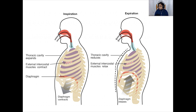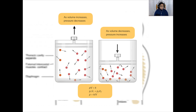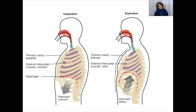The opposite happens when you breathe out deeply. The external intercostals relax and the internal intercostals contract, pulling the ribs down and in. At the same time, the diaphragm muscles relax and the diaphragm returns to its normal dome shape. The volume of the thorax decreases and the pressure inside rises slightly above atmospheric pressure. This difference in pressure forces air out of the lungs, and exhalation is aided by the fact that the lungs are elastic, so they tend to empty much like a balloon.